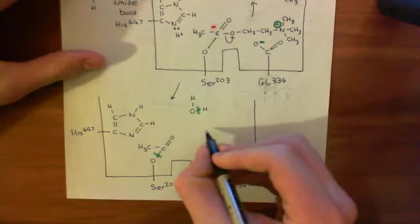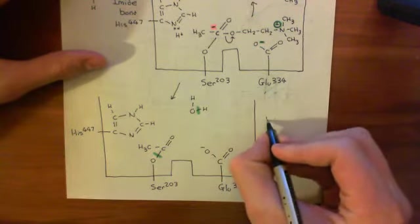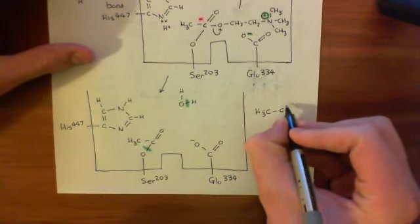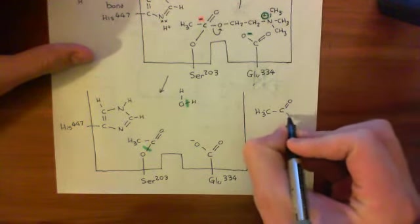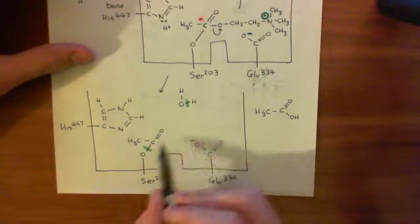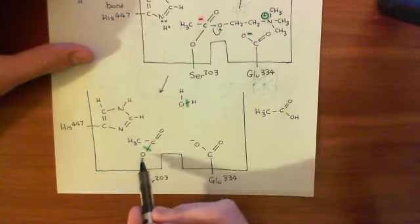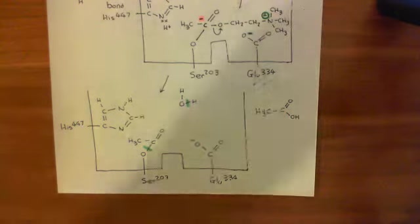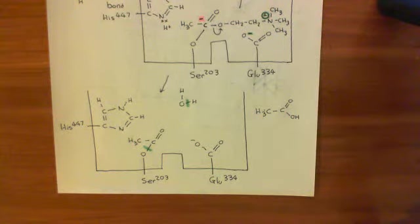So what you'll get then is, let's put this over here. So you'll get H3C, and then you'll get the restored carboxylic acid group now, so the carbonyl group and the alcohol group. So that will come off, and then you'll have the restored alcohol group because this hydrogen will bind to that oxygen, and serine 203 will be restored. So the enzyme is then back to the beginning, and it can catalyze another round.